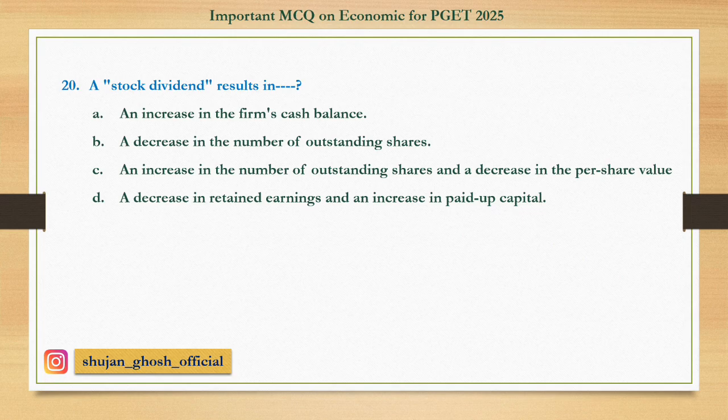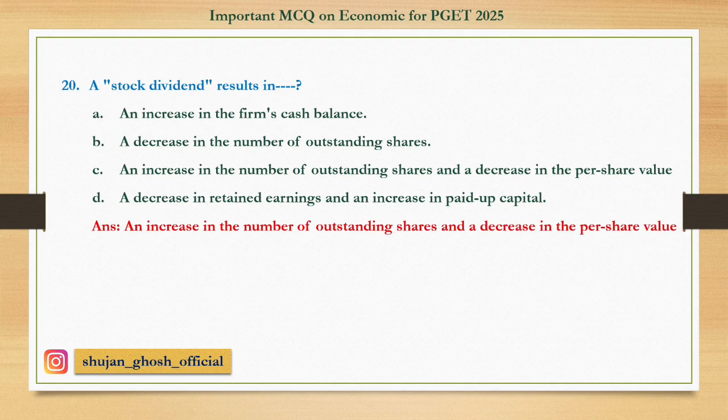Question number twenty: A stock dividend results in — option A: an increase in the firm's cash balance. B: a decrease in the number of outstanding shares. C: an increase in the number of outstanding shares and a decrease in the per share value. D: a decrease in retained earnings and an increase in paid-up capital. Answer: an increase in the number of outstanding shares and a decrease in the per share value. Stock dividend means when a company issues dividends in the form of stock — also known as a bonus share. When stock dividends are issued, the outstanding number of shares increases.